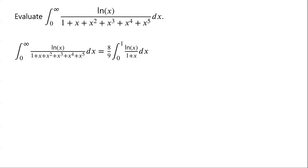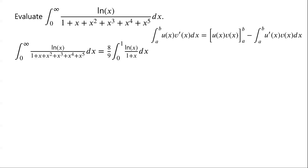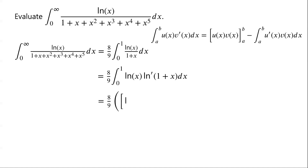Next we evaluate this integral using integration by parts. The formula is: integral from a to b of u(x) v'(x) dx equals u(x)v(x) from a to b, minus integral from a to b of u'(x)v(x) dx. We know that [ln(1+x)]' equals 1 over (1+x), so the integral equals (8/9) times the integral from 0 to 1 of ln(x) times [ln(1+x)]' dx. Applying integration by parts gives (8/9) times [ln(x) · ln(x+1) from 0 to 1, minus integral from 0 to 1 of ln(x+1) over x dx].